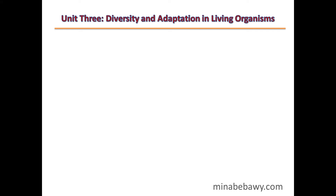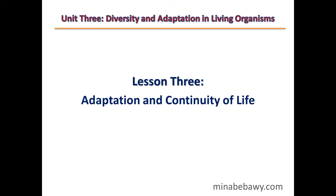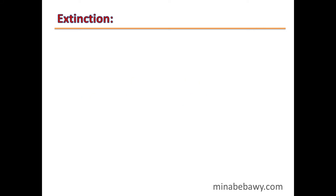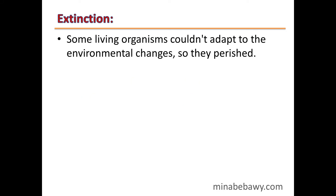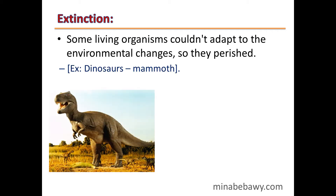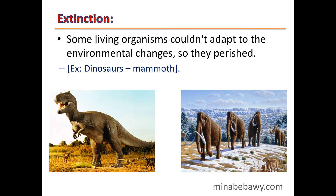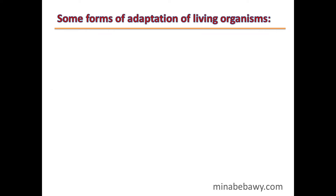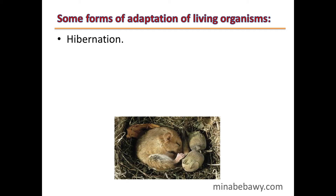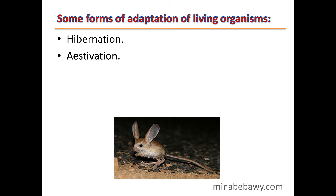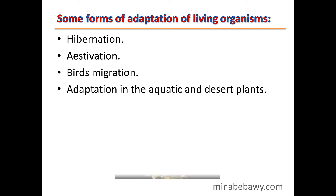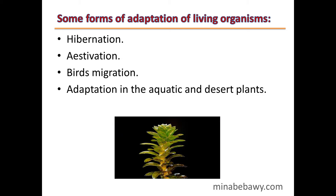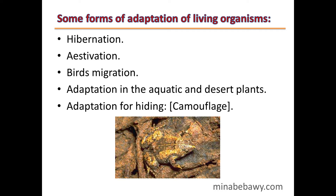Unit 3: Diversity and Adaptation in Living Organisms, Lesson 3 — Adaptation and Continuity of Life. Some living organisms couldn't adapt to environmental changes, so they perished or became extinct, such as dinosaurs. Some forms of adaptation include hibernation, aestivation, birds migration, adaptation in aquatic and desert plants, and adaptation for hiding or camouflage.